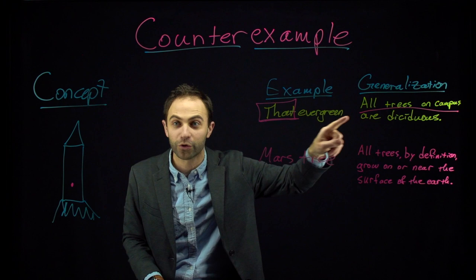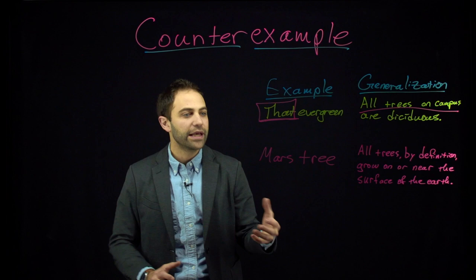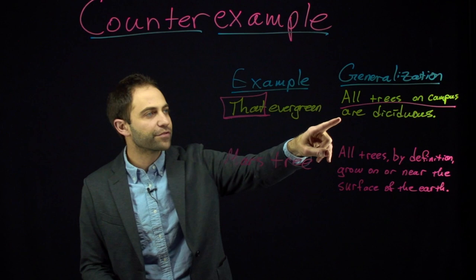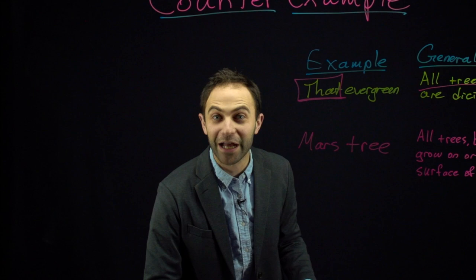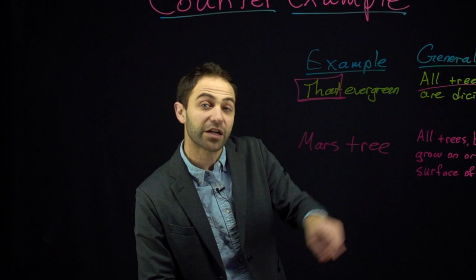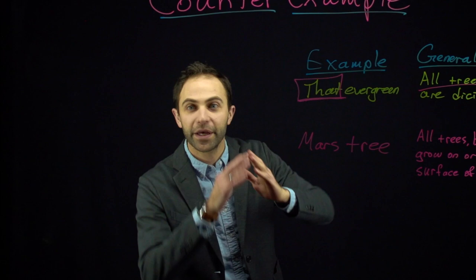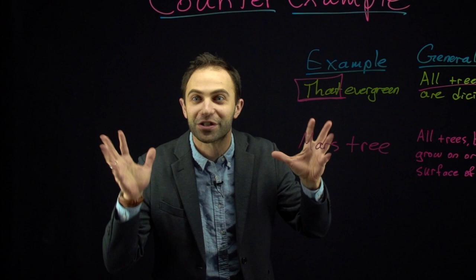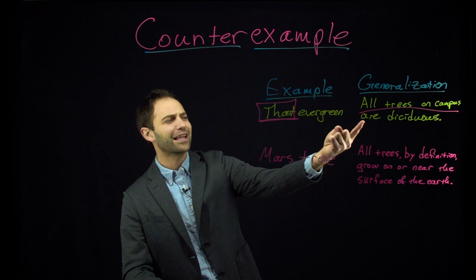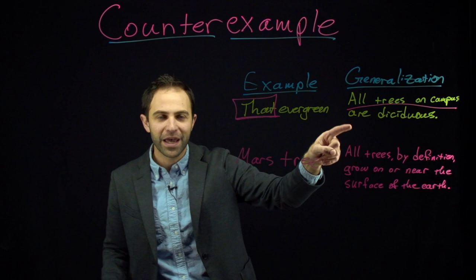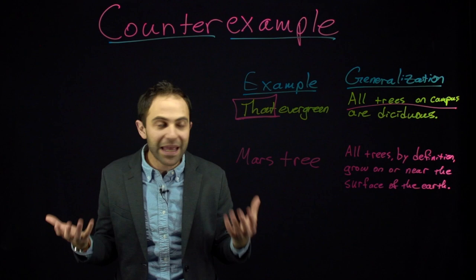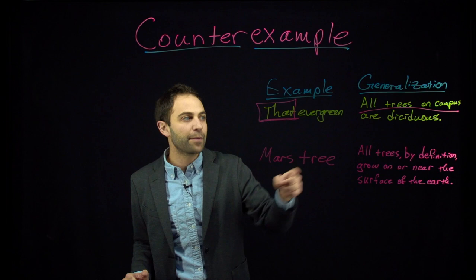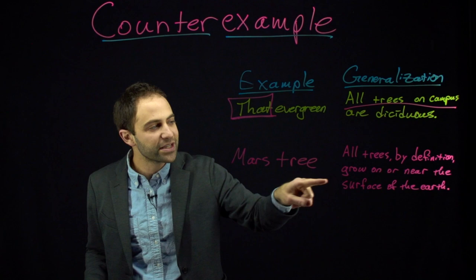That's why in some cases it works to have a fictional example, but in other cases it doesn't. Imagine if someone made the claim 'all trees on campus are deciduous' and tried to disprove it by saying, 'I can imagine a tree planted right there that doesn't lose its leaves — it's an evergreen or coniferous tree.' That doesn't work, because this is a claim about the actual group of trees on campus. If instead the claim were that all trees on campus, by definition conceptually, must be deciduous, then you could disprove it with a made-up example. But because this is a claim about actual trees, you need an actual tree. This other claim is about the concept of a tree, so a fictional example works perfectly well.